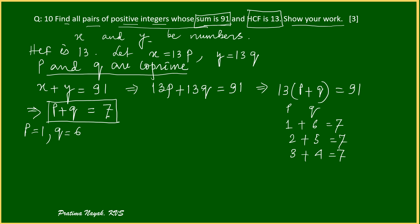So when P is 1, Q is 6, what will be the value of X? X is equal to 13P. So it will be 13 into 1, that will be 13. Y is equal to 13Q. Q is 6, so 13 into 6 is 78. So first pair is 13 and 78.